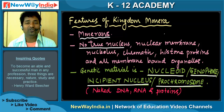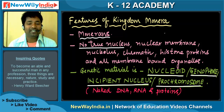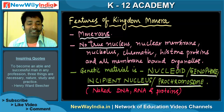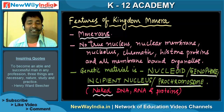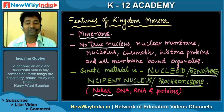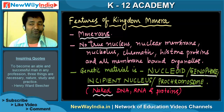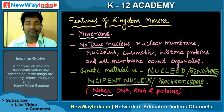These are called Monerans. They have no true nucleus, and their genetic material is naked DNA, RNA, and proteins. They are naked — hence they are called Incipient Nucleus or Prochromosome, Nucleoid or Genophore.